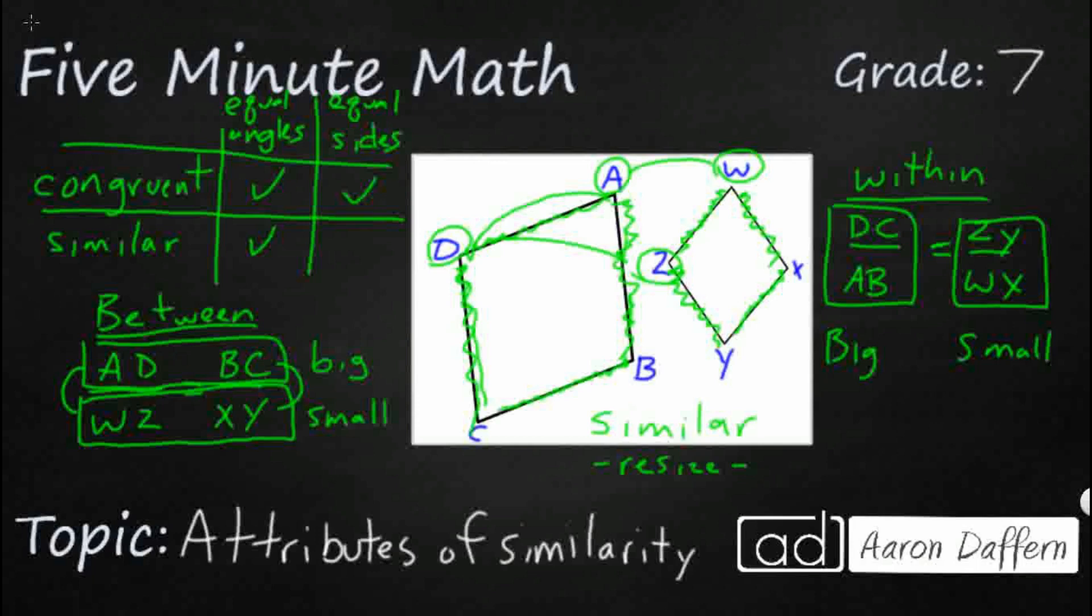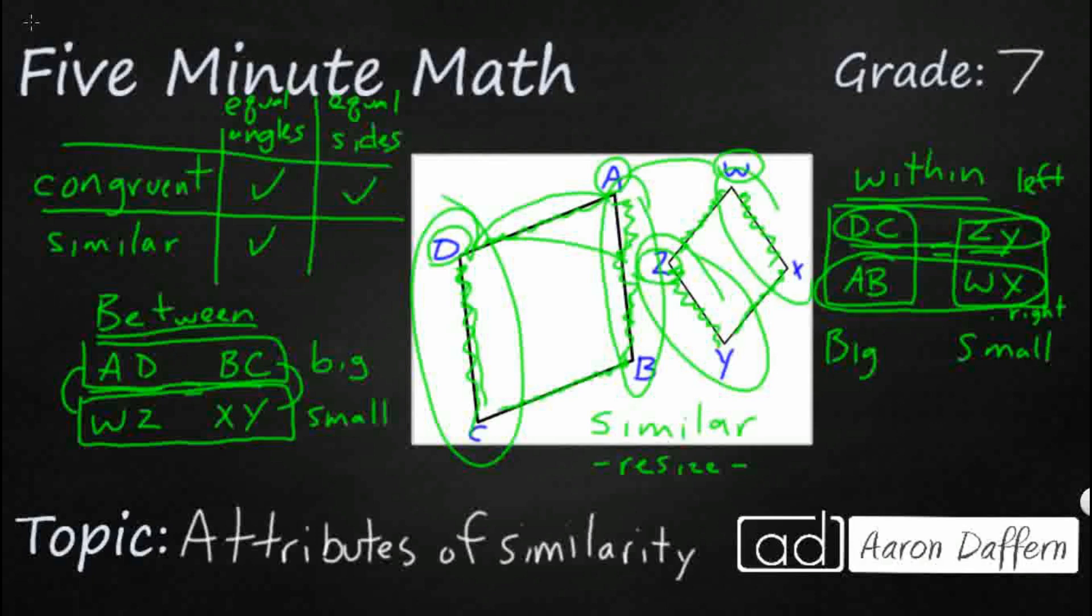But we do see here that if we were to rotate this smaller one, this top numerator, DC and ZY, that is coming from my left side. So those two sides have to match. So this side right here matches with this side right here. And then my numerators, my AB and WX, those come from my right side. So even though they're both within the big or they're both within the small, speaking about my numerators and denominators, the left to right, they match across. And that's how you look at the attributes of similarity with proportions.